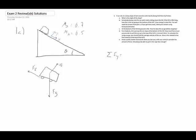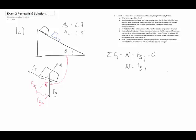We're going to split our forces into fgy and fgx. This gives us the same theta as the slope angle. In the y direction, we have N minus fgy equals zero — it's not accelerating in the y direction — so the normal force equals fgy, which equals mg cosine of theta.